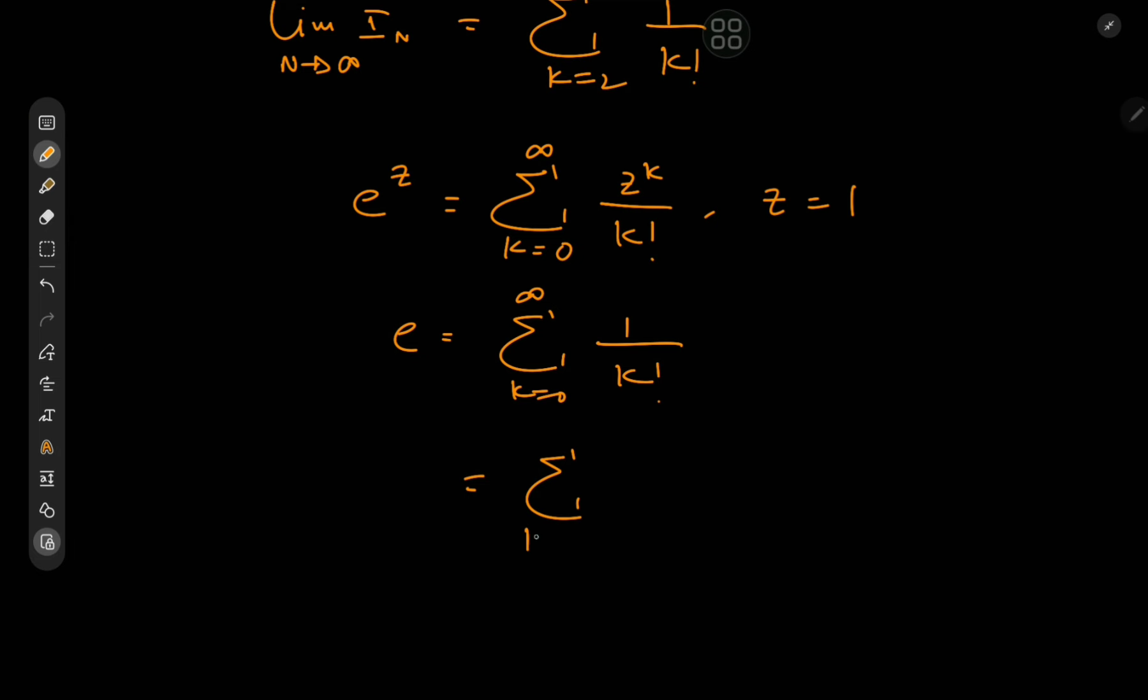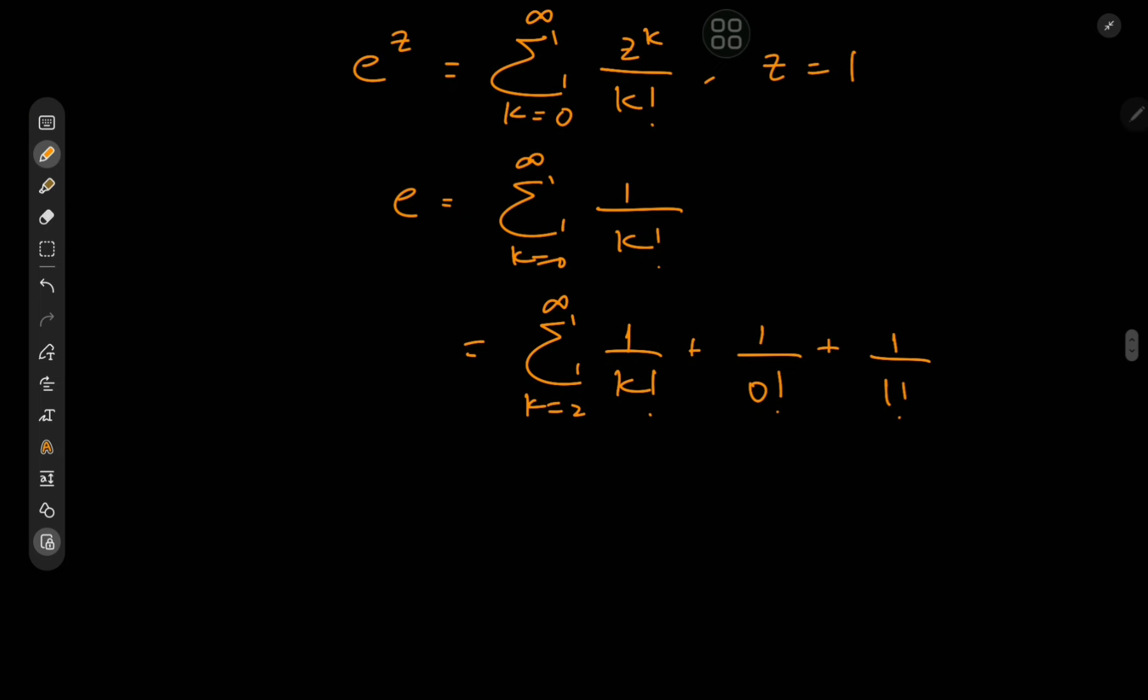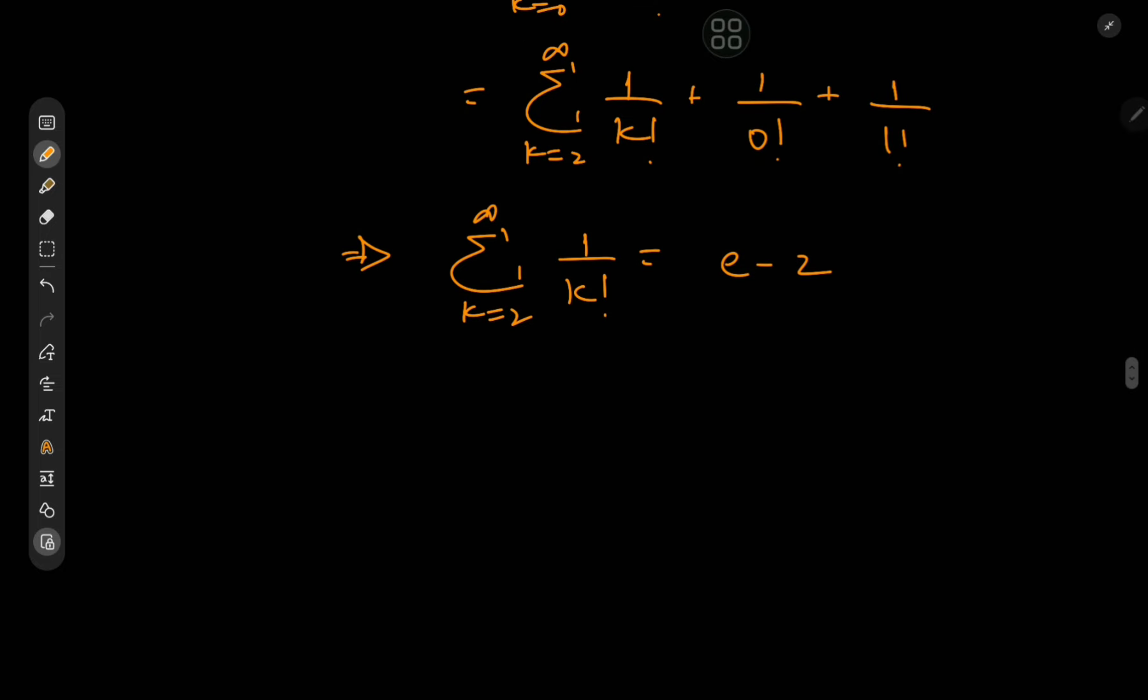So we have the sum over k from 2 to infinity of 1/k! equals e minus 1/0! minus 1/1!, which is 1 plus 1 which is 2, which implies that the sum equals e minus 2. Which is pretty cool because that means our integration problem has solved the limit of that absolute beast of an integral as n goes to infinity equals e minus 2.